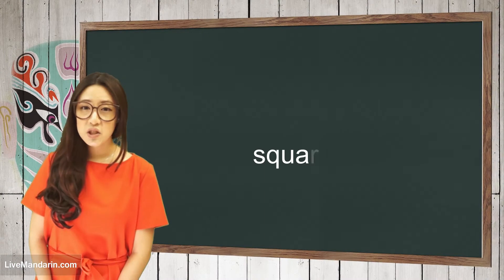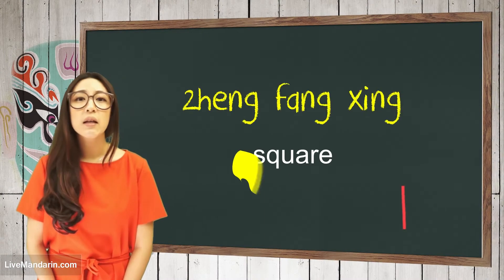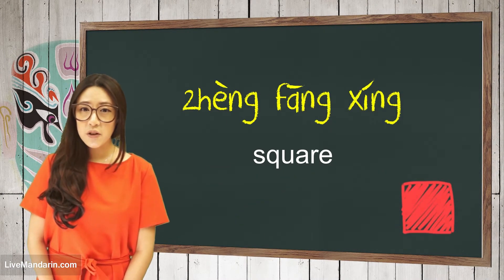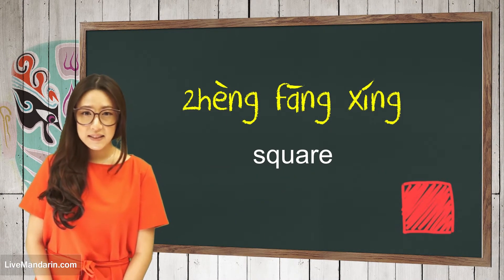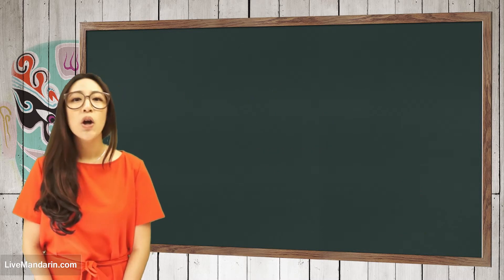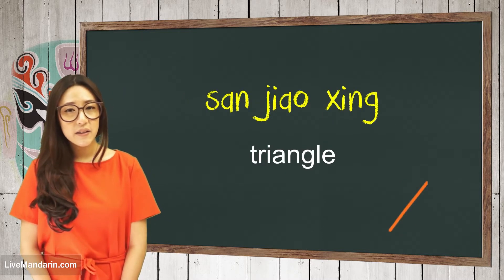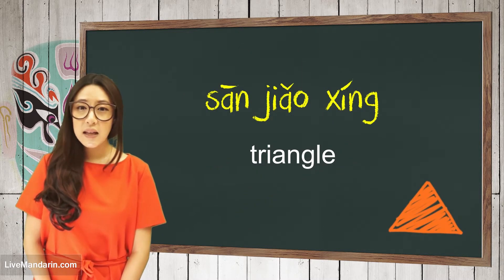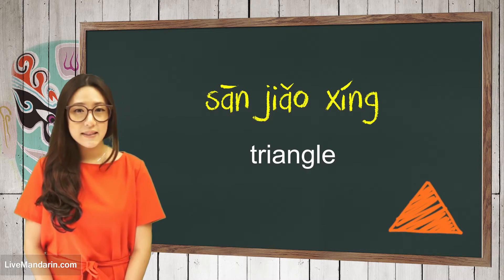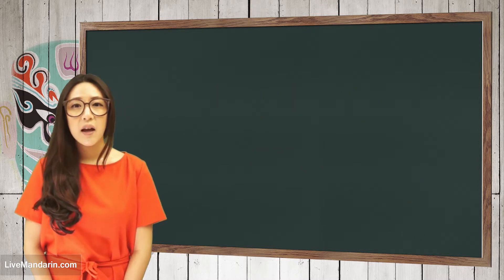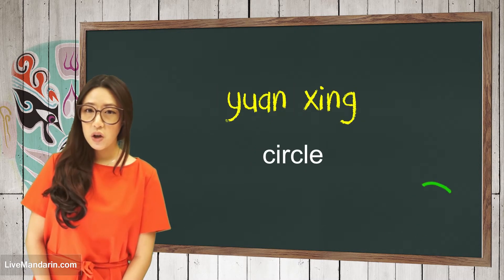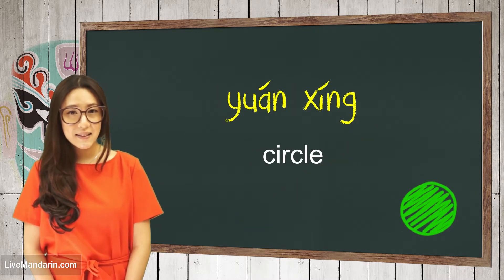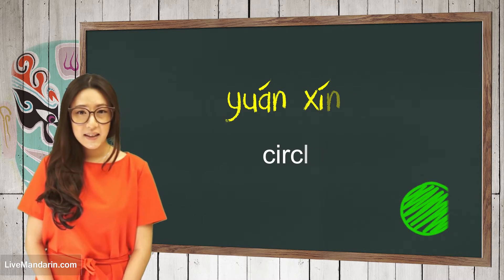Square — 正方形, 正方形. Triangle — 三角形, 三角形. Circle — 圆形, 圆形.